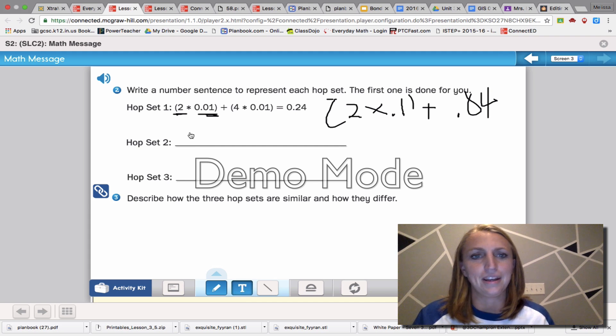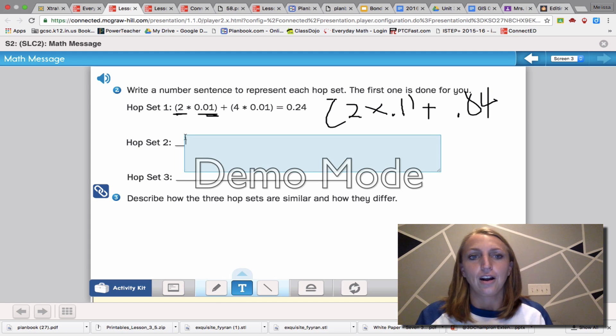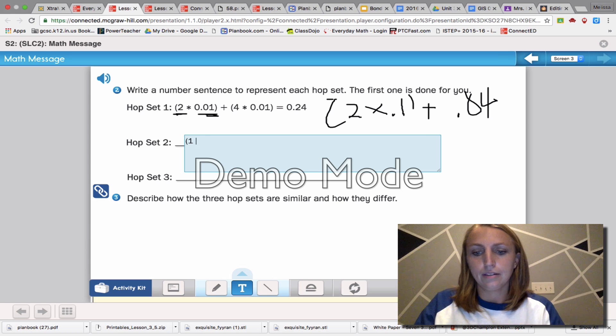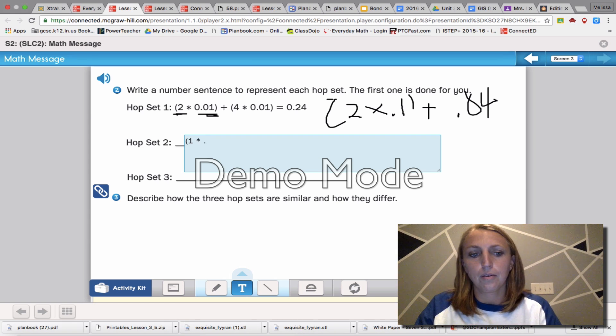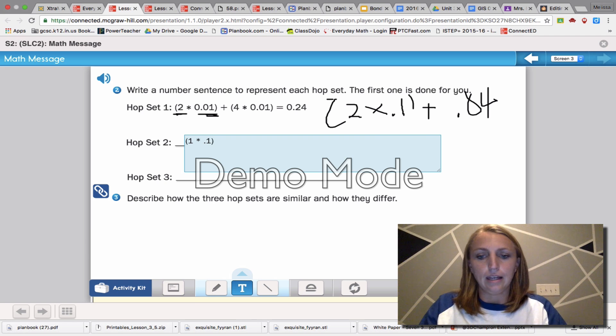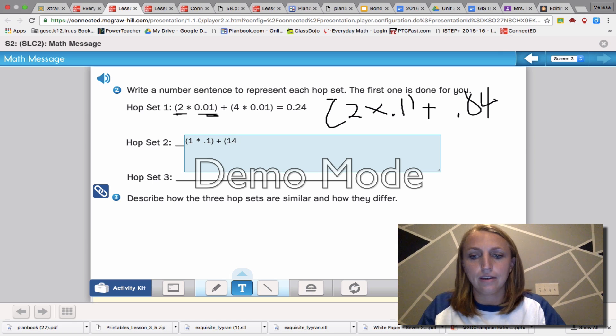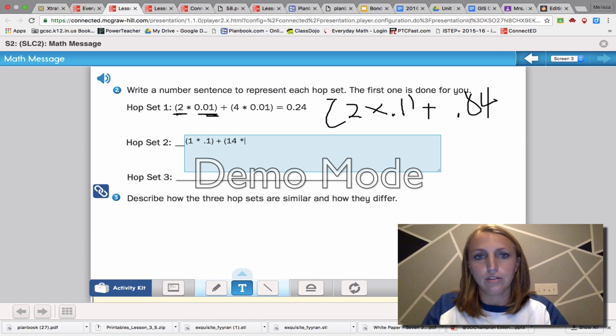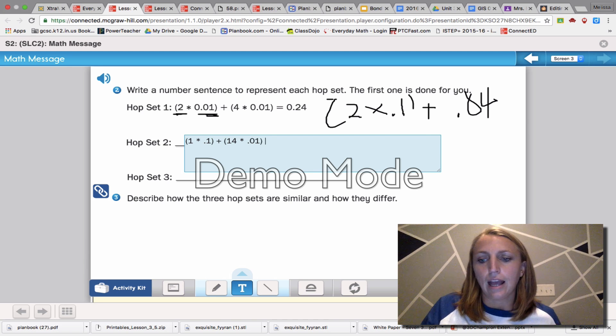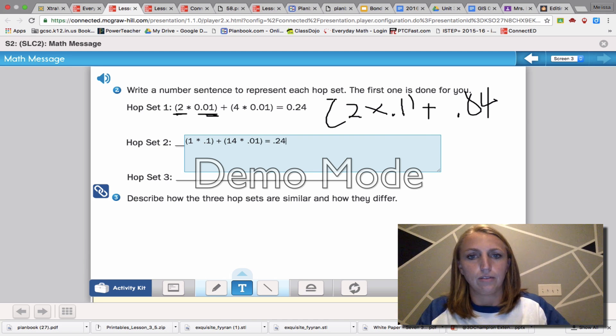So our next one, we've got in parentheses one hop times one tenth, remember we took one bigger jump, plus fourteen hops at your smaller jumps of one one hundredth, and that gives us then 24 one hundredths.